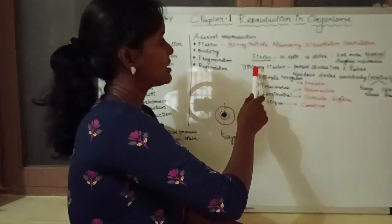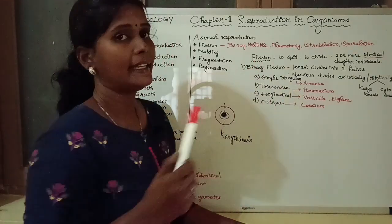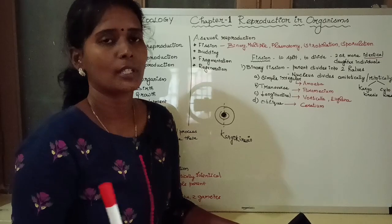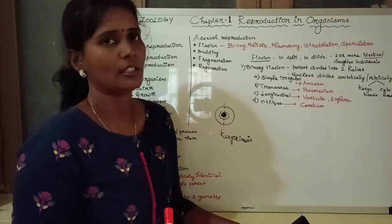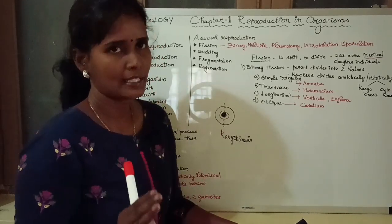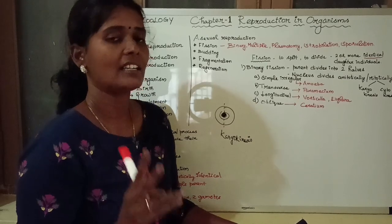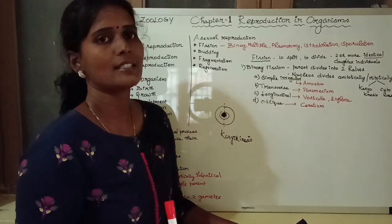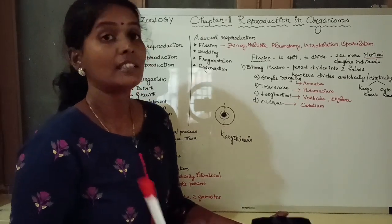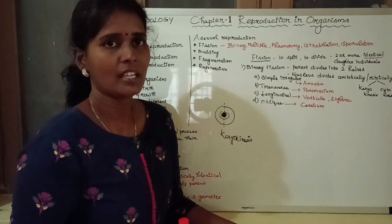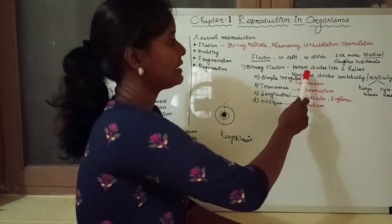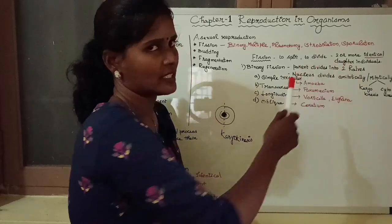Binary fission is the first type. 'Binary' means two — one parent individual, one parent cell, divides into two daughter cells. The parent divides into two halves. The nucleus divides amitotically or mitotically, followed by cytoplasmic division, resulting in two identical offspring.